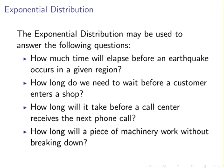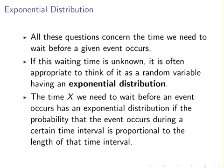In those four questions, time is the commonality between all four. The exponential distribution is not only for time, but it is the easiest point to start with. Time is a continuous variable, so that is why the exponential distribution will be a continuous probability distribution.